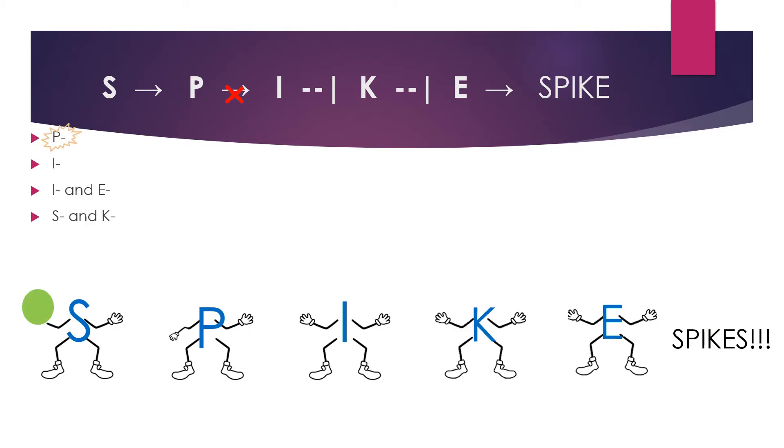When determining whether or not this process will go to completion, you must look at the final protein, which is E in this case. E is the necessary component to produce spikes, so it cannot be blocked.